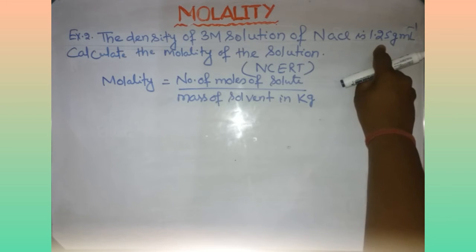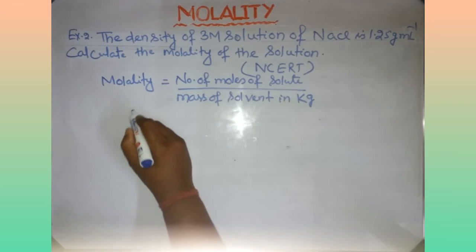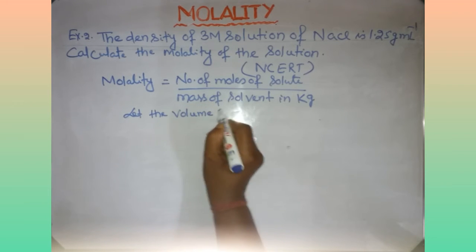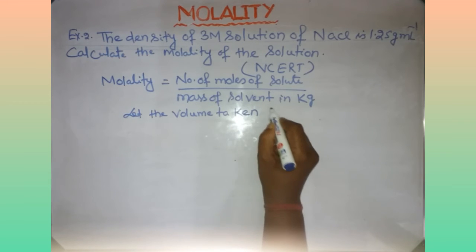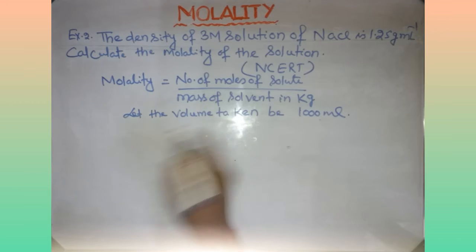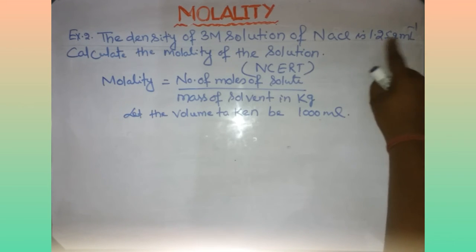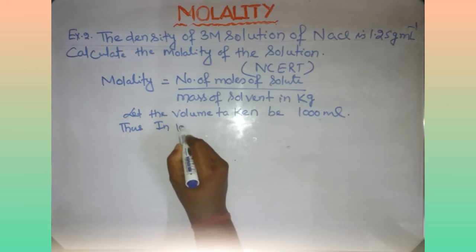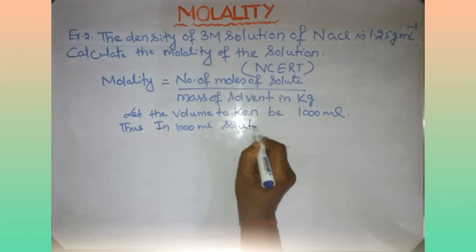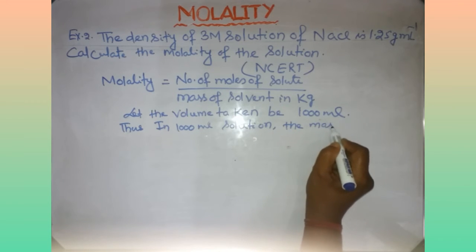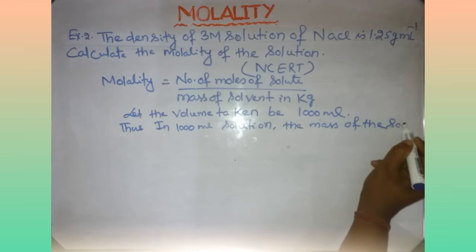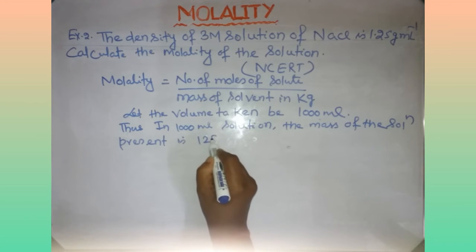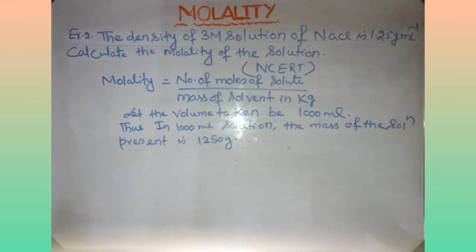This is the real interpretation of density. Let the volume taken be 1000 mL. In 1 mL, the mass of solution is 1.25 grams, so in 1000 mL the mass of the solution is 1250 grams. This is the mass of the solution.